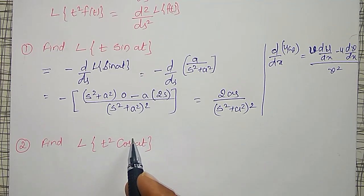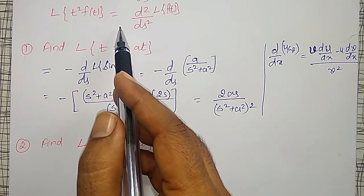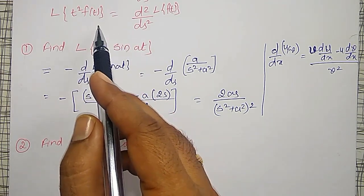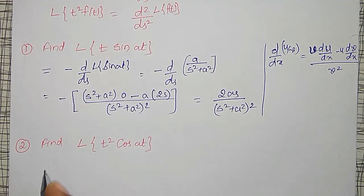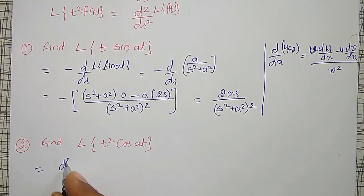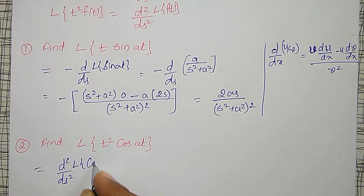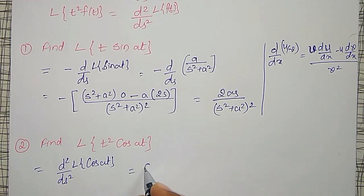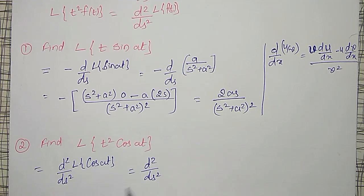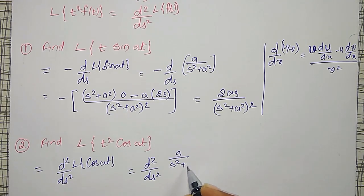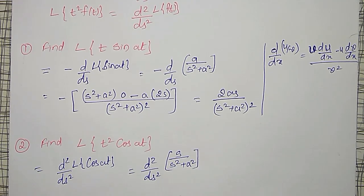Again, t squared is multiplied by cos(at), therefore f of t is cos(at). Using this property, t squared into f of t gives the second order derivative of the Laplace transform of cos(at), which equals d squared by ds squared of s divided by s squared plus a squared. This one I have to differentiate two times.